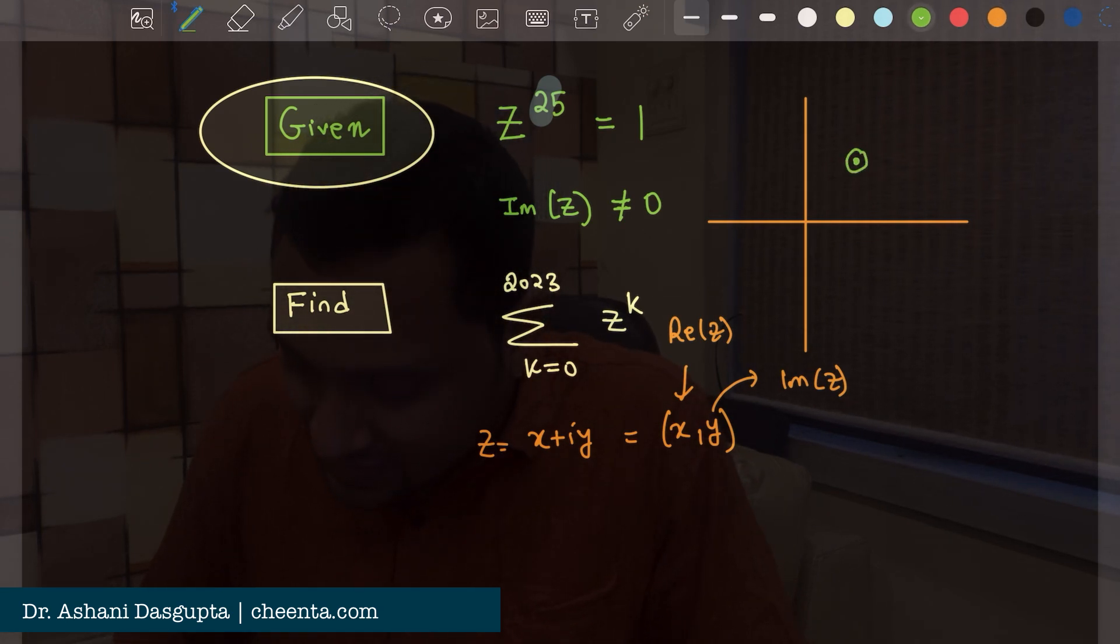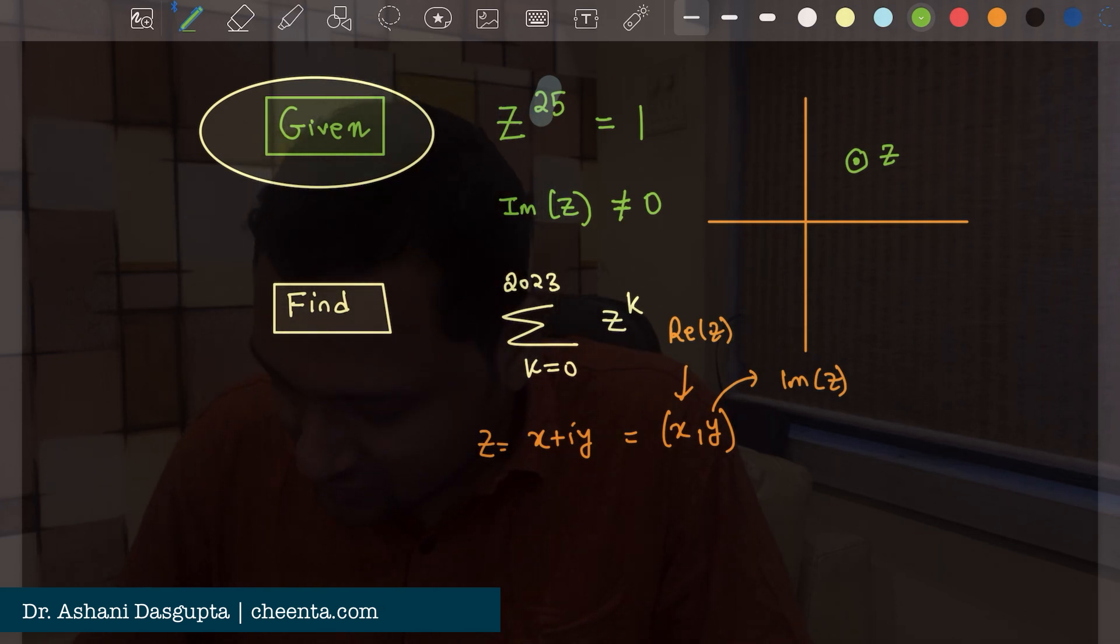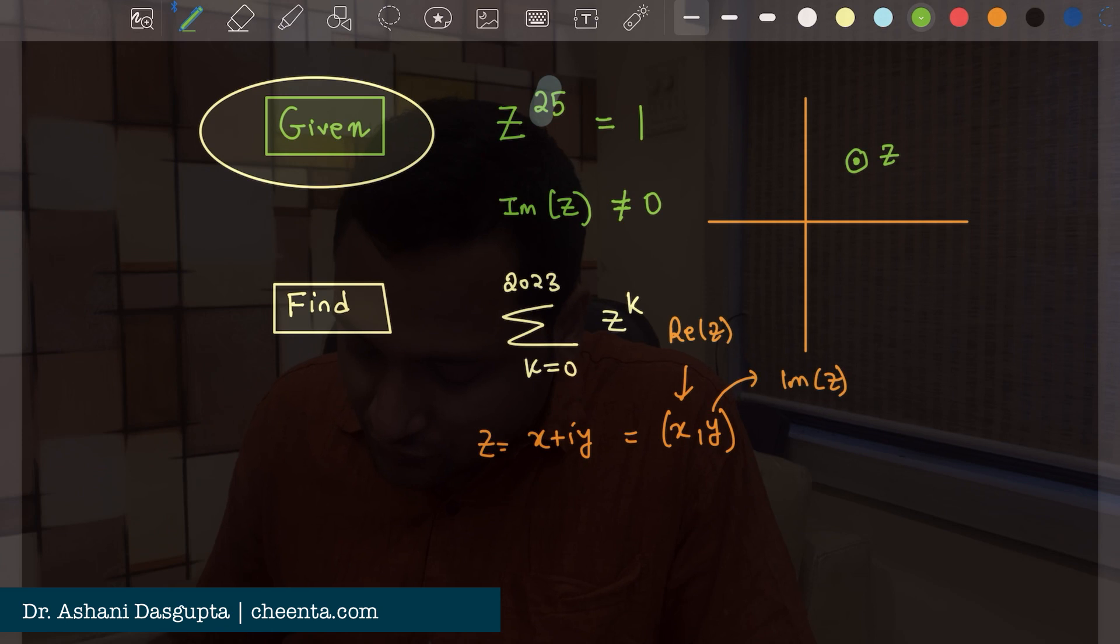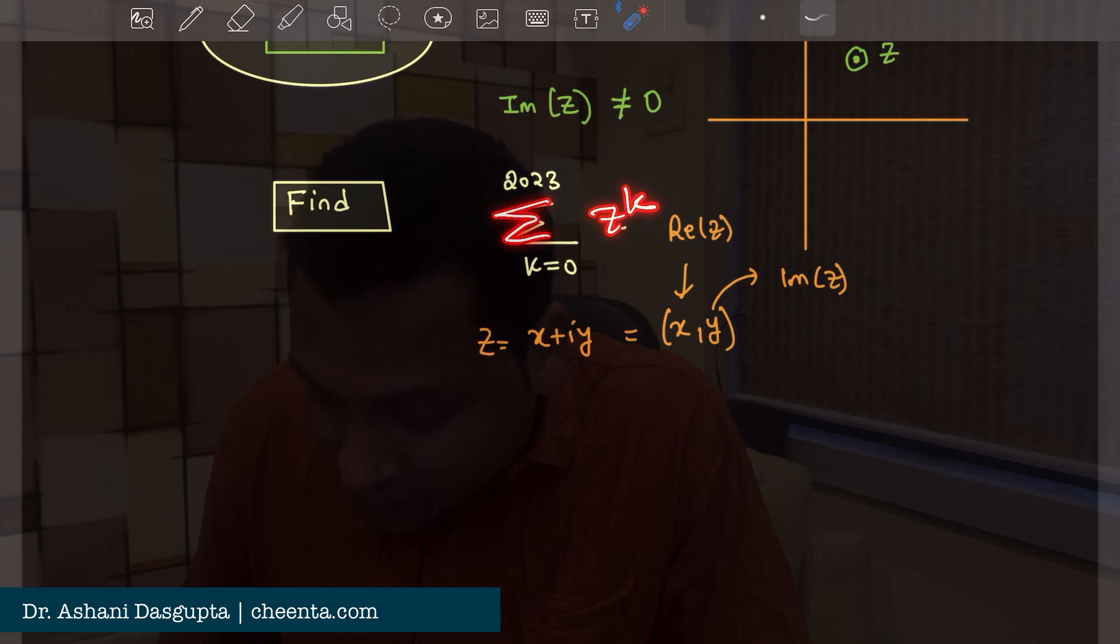So z is given that if you raise z to the power 25 then you get 1. With this information we have to find out the summation of z to the power k from k equal to 0 to 2023.